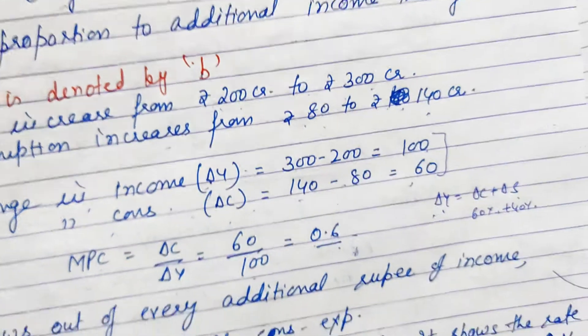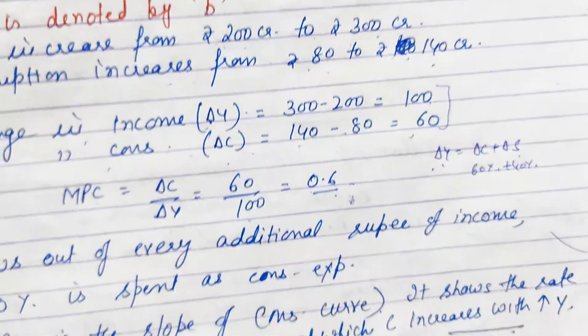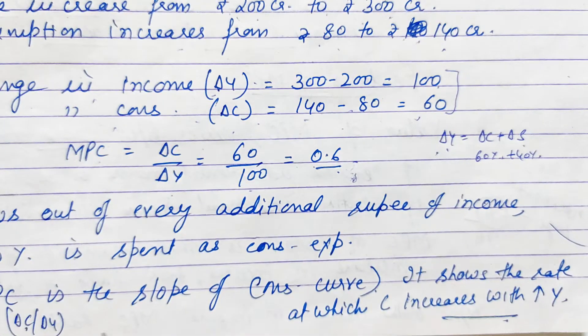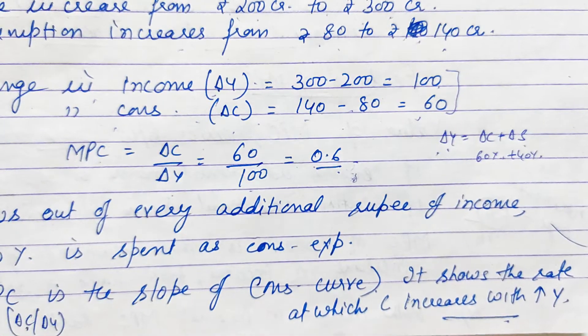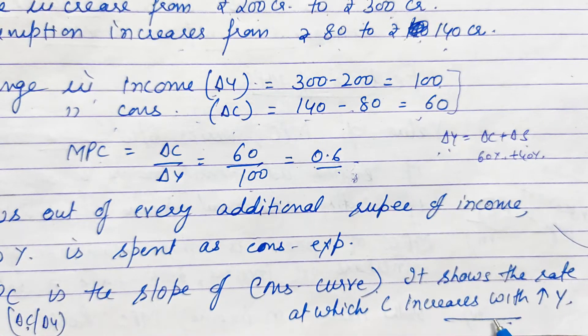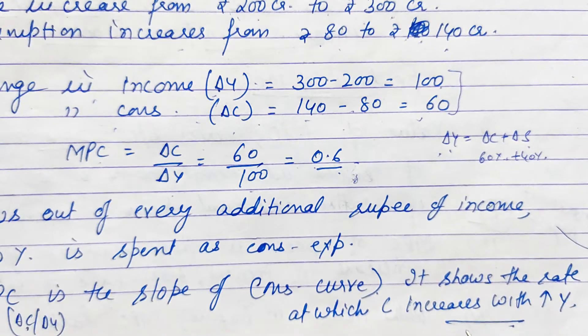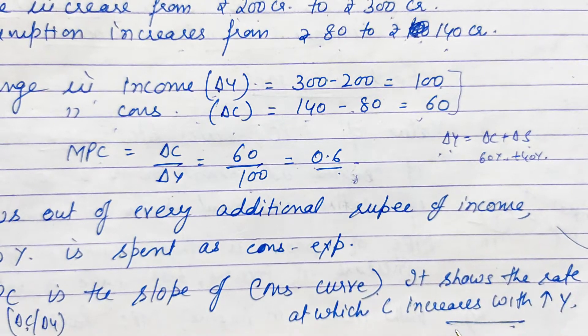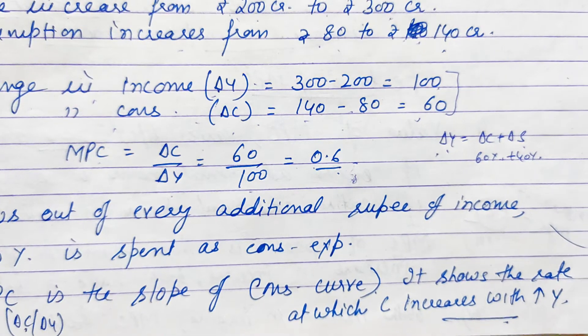One more point: MPC tells us the slope of the consumption curve. It tells us that when income increases, at what rate consumption is increasing. This is about MPC, and now we will discuss some more points related to it with the help of a schedule.